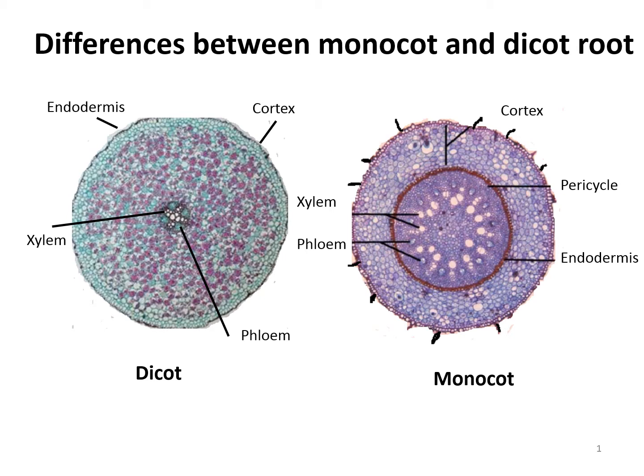Regarding pith, it is very small in dicot and large and well developed in monocot. Secondary growth occurs in dicot while it is absent in monocot. Cambium is present in dicot while absent in monocot.